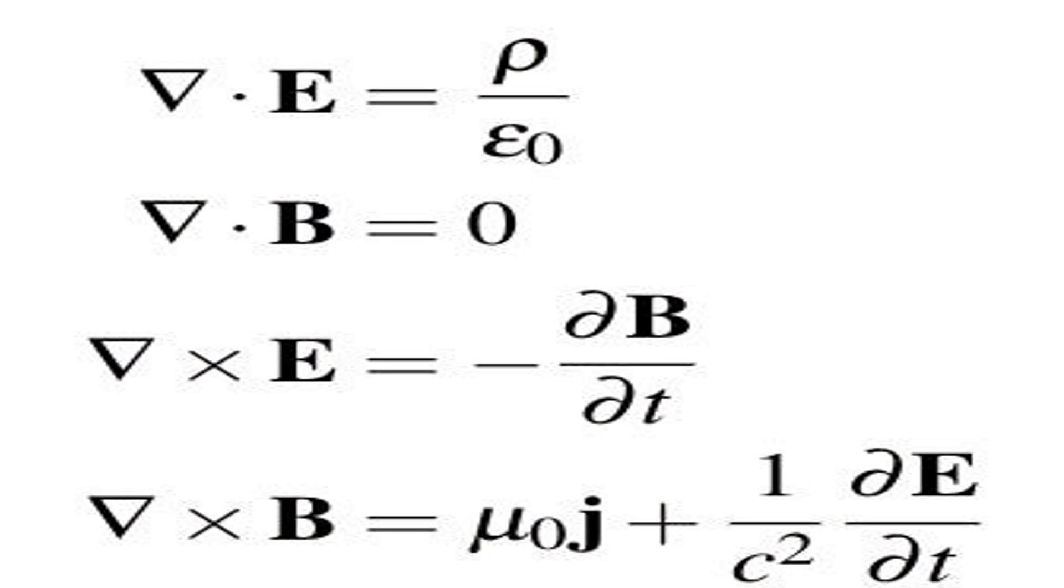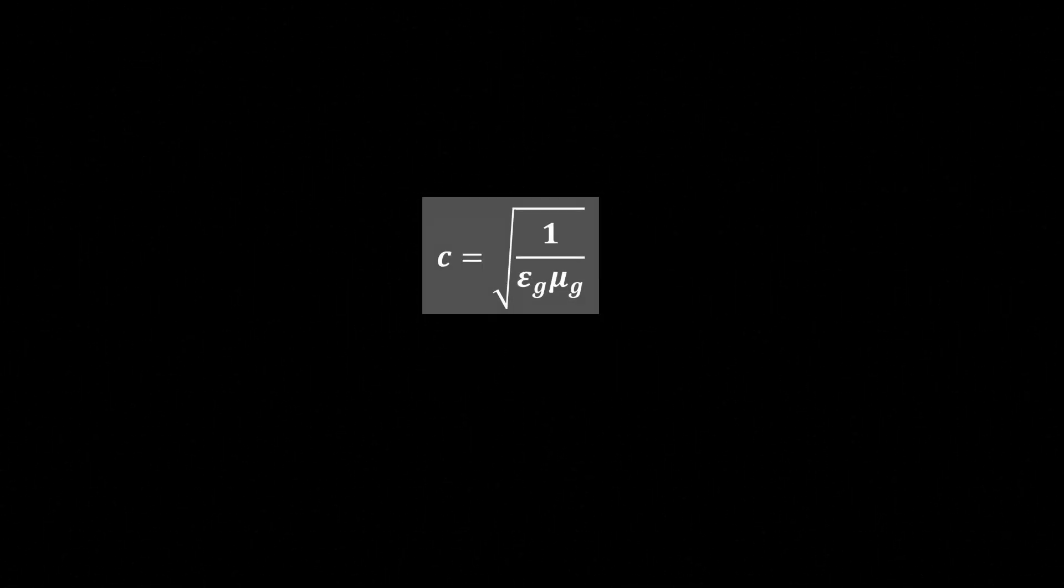Note that the original Maxwell's equations are written in terms of epsilon and mu, not c. It is only when you make an approximation of a region of space that contains very little charge and charge current, that you have the speed of light as the square root of 1 over epsilon mu, which you can now use to write the Maxwell's equations with the approximation in mind.